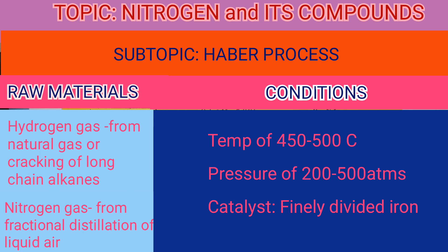To understand this process easily, it's always important to know the raw materials and their sources, the conditions for the process, and the parts of the process. The raw materials are hydrogen, which can be obtained from natural gas, by cracking of long-chain alkanes, or by electrolysis of brine. Nitrogen is obtained from fractional distillation of liquid air.